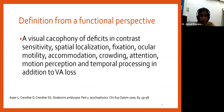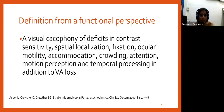From a functional perspective, one of my favorite definitions — given by Dr. Lisa Asper — defines amblyopia as a 'visual cacophony of deficits' not just limited to visual acuity, but also encompassing contrast sensitivity, spatial localization, fixation, ocular motility, accommodation, crowding, attention, motion perception, and temporal processing. Understanding these deficits is important because testing and therapy should address each area identified.